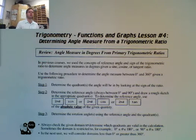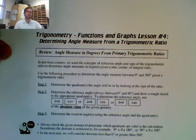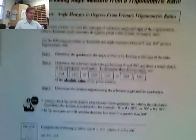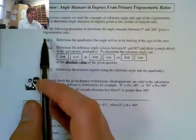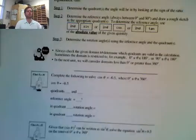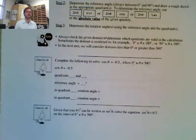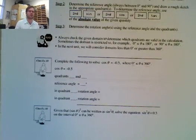Welcome back to Math 30-1. In today's lesson we're going to learn how to determine the angle measure from a trigonometric ratio. The book gives you three steps to follow, but we're going to jump right to class example number one.